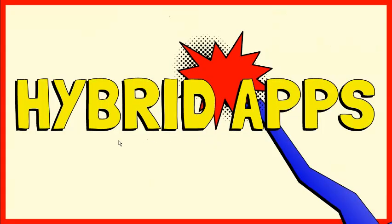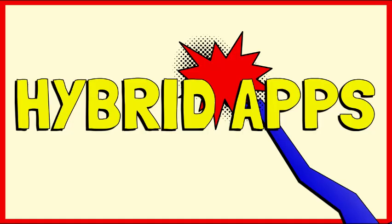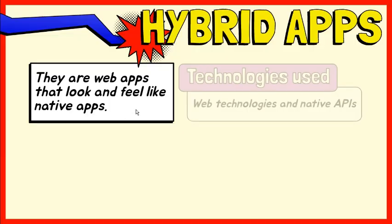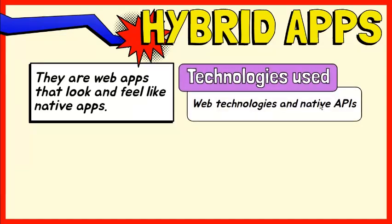We are now in the third category, and this is called hybrid apps. These apps combine elements of both native and web apps. Basically, they are web apps that look and feel like native apps. They might have a home screen app icon, responsive design, fast performance, and even be able to function offline, but they are really web apps made to look native. Hybrid apps use a mixture of web technologies and native APIs, or application programming interfaces.